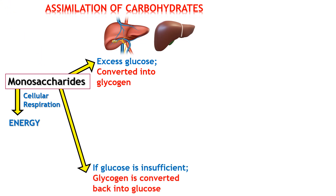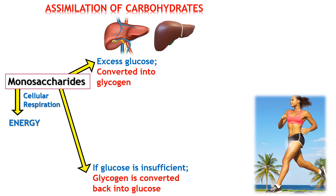If glucose is insufficient, then the glycogen which is stored in the liver can be converted back into glucose. That is one way carbohydrates are utilized in the body. This is especially common if somebody is carrying out vigorous activity like exercising — you're going to have insufficient glucose, and glycogen can then be broken down in the liver to convert it back into glucose, restoring blood glucose to normal.